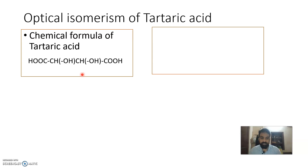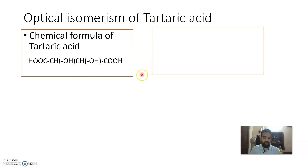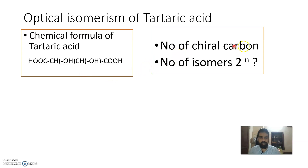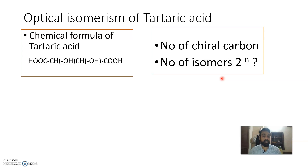If there are two chiral carbons, how many optical isomers will there be? The number of optical isomers is 2 raised to N, where N is the number of chiral carbons. That is 2 raised to 2, which equals 4. So lactic acid has 2 isomers and tartaric acid has 4 isomers.